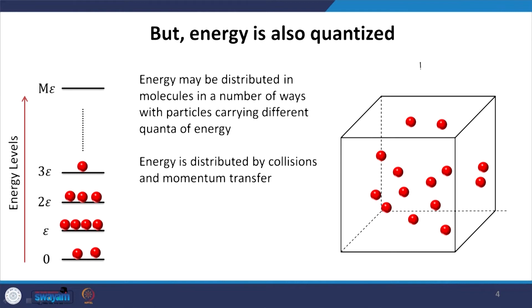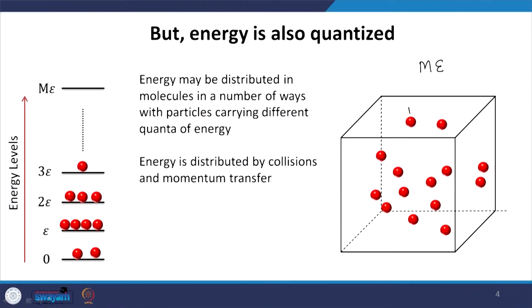In a similar manner, once the system has a certain energy — say the energy of the system is mε — that means we have m units or m packets of energy available. Those are in some sense m chocolates being distributed to the molecules, which are like the students in the analogy. I can give all m to one molecule, distribute them equally, or give one to this molecule, two to this molecule, three to another, and so on. There can be many many possible distributions.